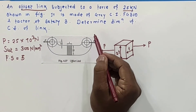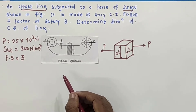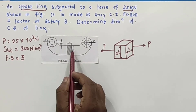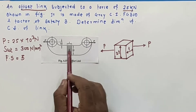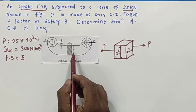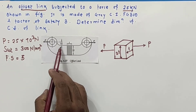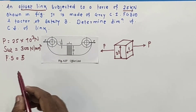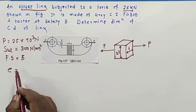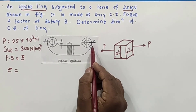We need to determine the dimension of the cross section. The important thing here is the offset link — you can see the structure. The link has a force P of 25 kN, with cross section 2T by T. There is a 10 mm offset. The important concept here is eccentricity — what is eccentricity? It is the distance between the load applied with respect to the center of gravity (CG).